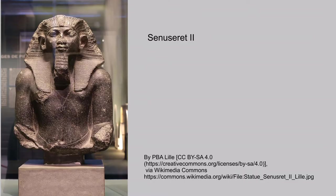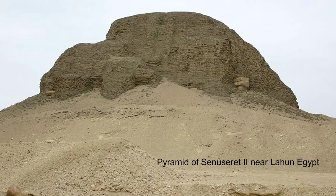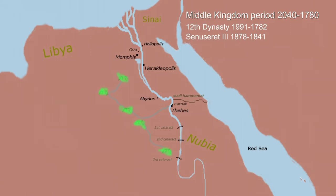Amenemhat II's son, Senusret II, continued the project of dredging the canal to the Fayoum. He was also very noted for his pyramid, which had trapdoors, false passages, and was a very unique pyramid for its time.